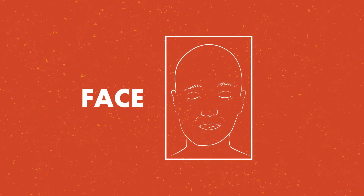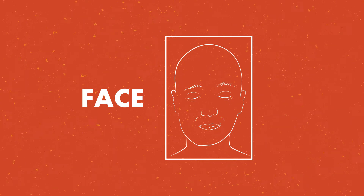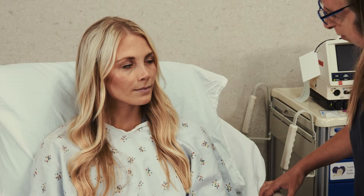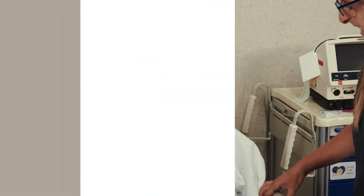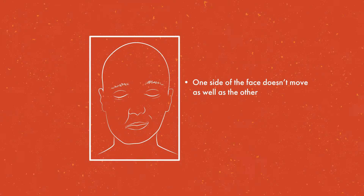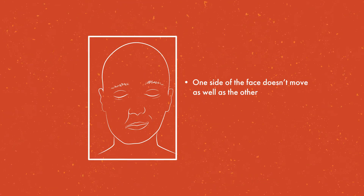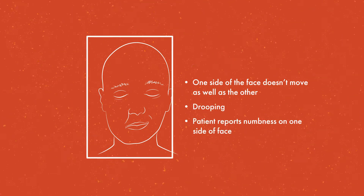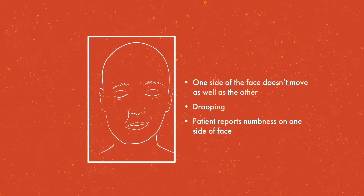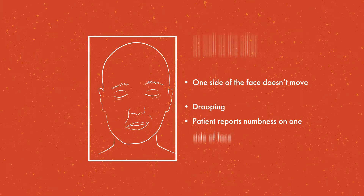First, assess your patient's face. Have the patient smile or show their teeth. A normal finding would be for both sides of the face to move equally. An abnormal finding would be if one side of the face doesn't move as well as the other, resulting in drooping, or if the patient reports numbness on one side of the face.